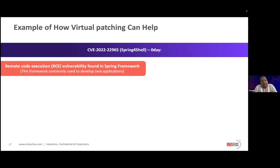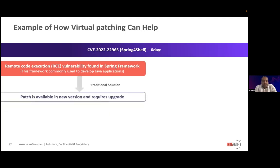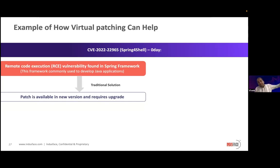It was a zero-day vulnerability, and when this vulnerability was reported, a patch was made available. But the recommended solution was to upgrade the patch. However, updating a version of a framework is not that easy — depending on the organization, they might be using an older version, and getting it upgraded has to go through sanity testing. It goes through all the problems we talked about in the previous session.